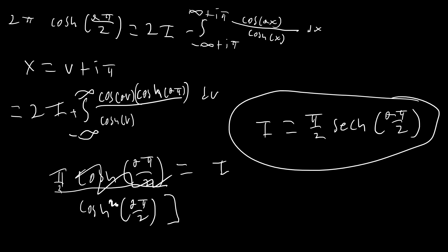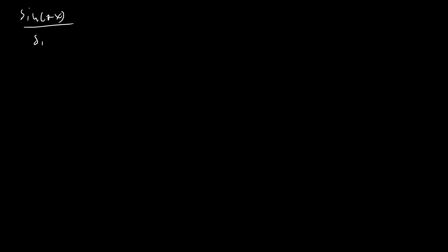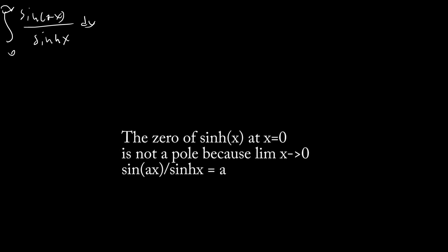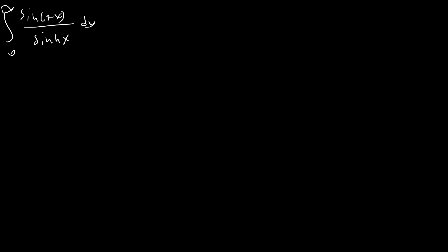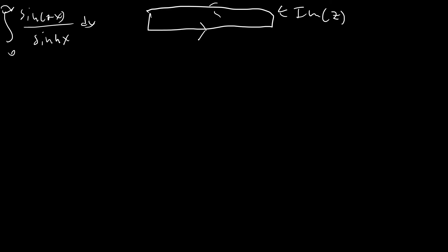Now let's do our other integral, which is very closely related: the integral of sin(ax) / sinh(x). We're going to use almost the same contour. Since we're dealing with sin(ax) / sinh(x), we need to worry about the zeros of sinh(x), which occur at 0, iπ, 2iπ, and so on — similar to how zeros of sin(x) are arranged. Our contour takes the same shape, except the upper line is at Im(z) = π/2. Since there are no poles inside this contour, by Cauchy's theorem the integral evaluates to zero.